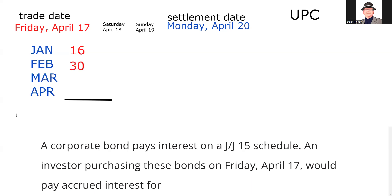So that's 16 days for January, or 30 — the buyer owes me for all of February: 30 days, and all of March: 30 days. It makes sense that the count goes up to but not including the settlement date, because on that Monday the bonds are the buyer's and the buyer is entitled to interest going forward. That gives us 19 days in April.